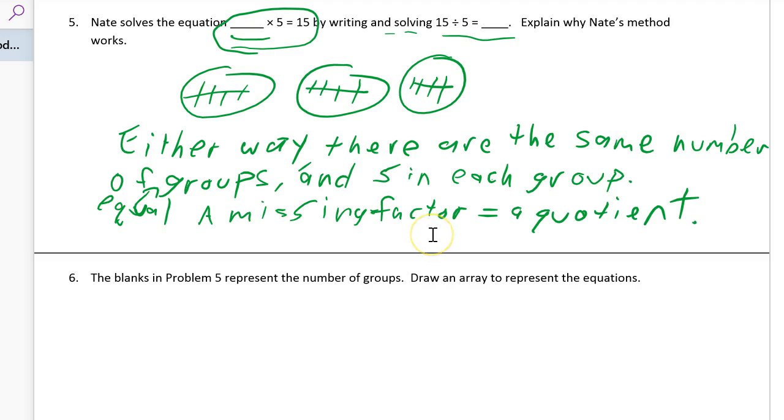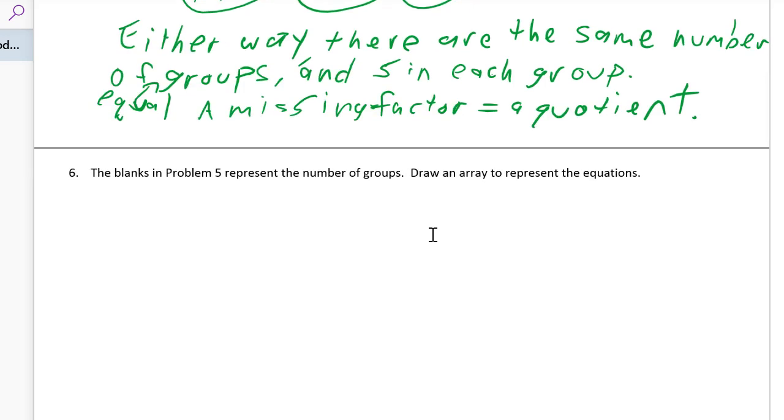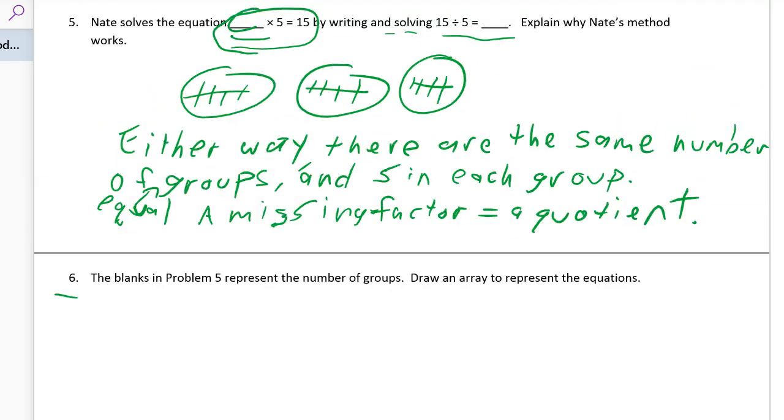All right, and then finally number 6. Sorry for my messy handwriting, but it's the best I can do with this. Number 6, the blanks in problem 5. So that's what these blanks are right here, the blanks in problem 5. Those are the 3's, right? Those would be 3's. Represent the number of groups, right? Because we had in our picture, we had 1, 2, 3 groups. That's the number of groups. Draw an array to represent the equation. So here's the array.